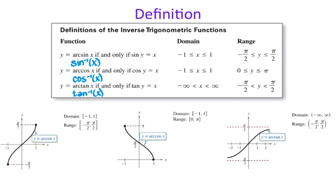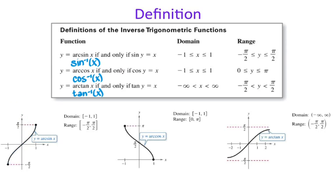Inverse comes from switching X's and Y's. So if you were to take your sine graph and literally switch all of your X coordinates and Y coordinates, you would have this curve in black, but it would also continue because trig functions are periodic. Now for a graph to be a function, it has to pass the vertical line test, but the full inverse drawn in blue doesn't pass the vertical line test. So with inverse trig functions, we only look at certain portions of it.